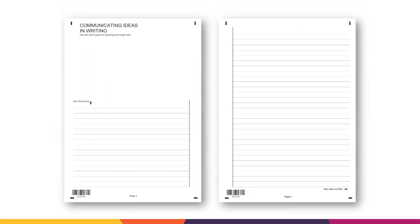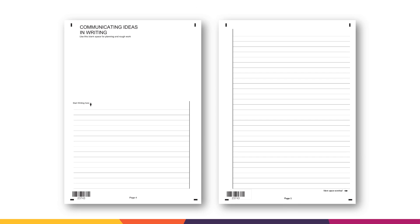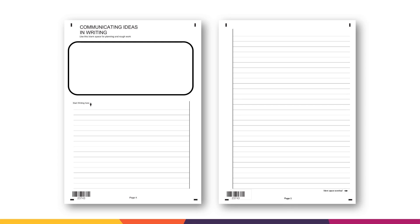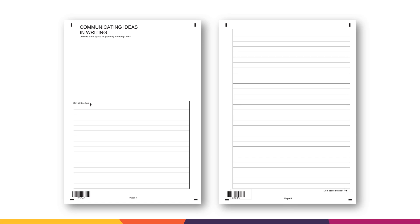Here is the section of the answer booklet that you will be using for the communicating ideas in writing test. If you need to, you can use the blank space for planning — you will not be awarded any marks for planning, only what you write on the lined paper. Start your writing there. After this test you will have another 10-minute break.